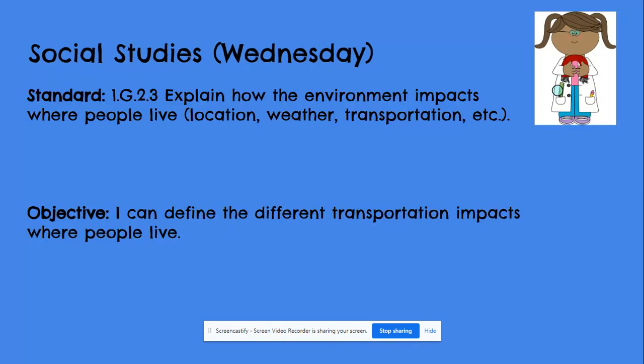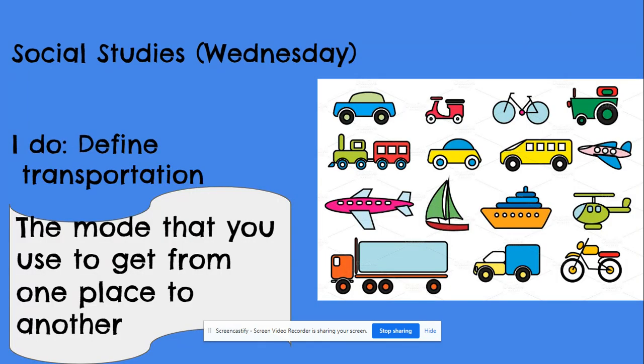Today we're going to explain how the environment impacts where we live. Our objective is that we can define different types of transportation and how it impacts where we live. What is transportation?